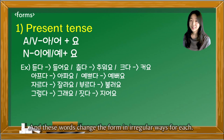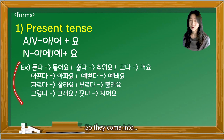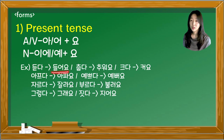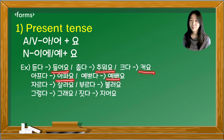Some words change form in irregular ways: 들어요, 추워요, 커요, 아파요, 예뻐요, 잘나요, 불러요, 그래요, 지어요.